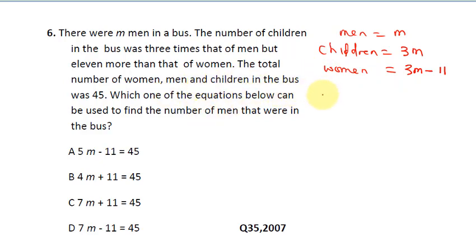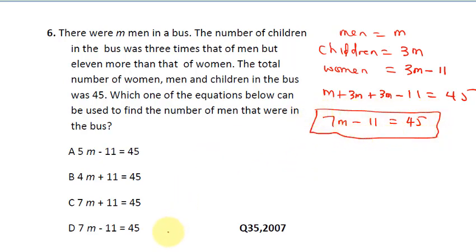It says if the total number of women, men, and children in the bus was 45, that means m plus 3m plus 3m minus 11 will be 45. Which of the following equations can be used to find the number of men in the bus? Let's solve this algebra. 3m plus 3m is 6m, plus m, this is 7m minus 11 equals 45. So this is our final answer. This is the equation we can use to solve the algebra. The correct answer here is D.